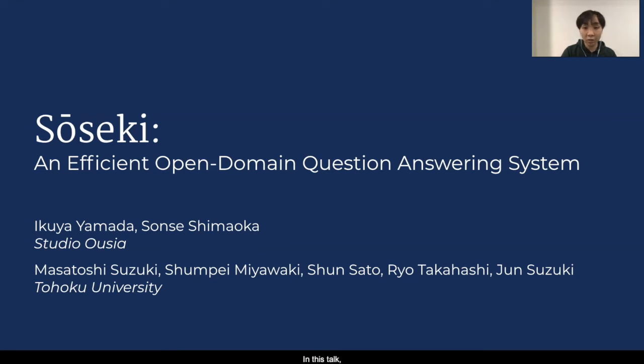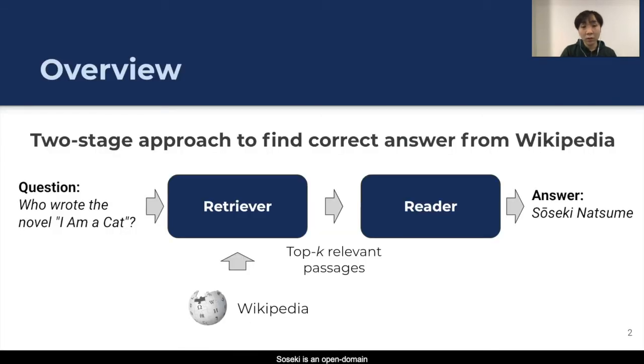Hi, I'm Ikuya Yamada. In this talk, I will talk about Soseki, our efficient open domain question answering system. This is joint work with Ikuya Yamada and Sho Shimao from Studio Ousia, and Masada Suzuki, Shumpei Miyawaki, Shun Sato, Ryo Takahashi, and Jun Suzuki from Tohoku University. Soseki is an open domain question answering system that finds an answer to any given question from Wikipedia. Following past work, our system adapts two-stage approach consisting of retriever for passage retrieval and reader for reading comprehension. Given the question, retriever obtains top-k candidate passages from Wikipedia. Then, reader selects the most relevant passages from them and also extracts an answer from the selected passage.